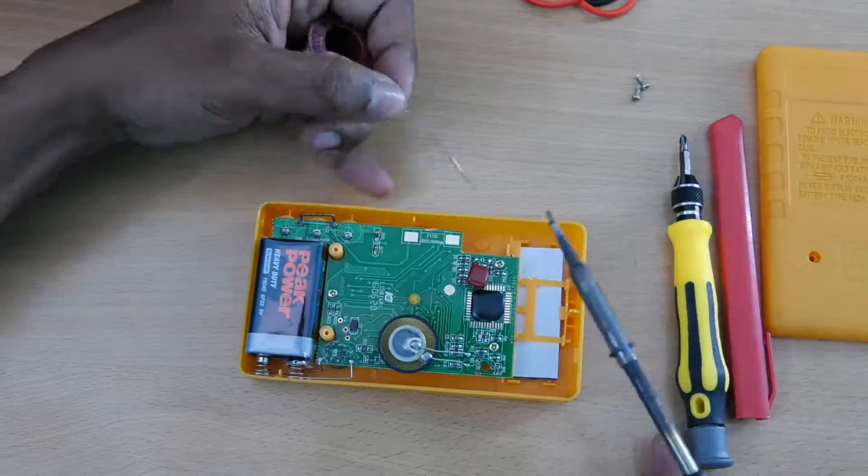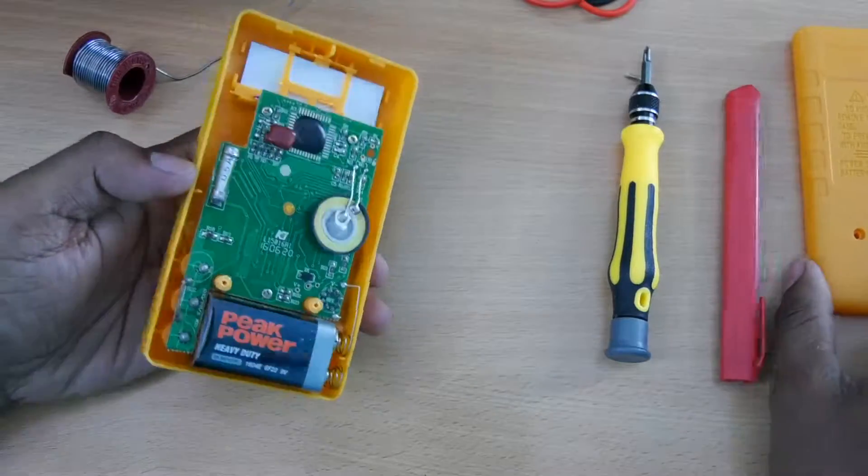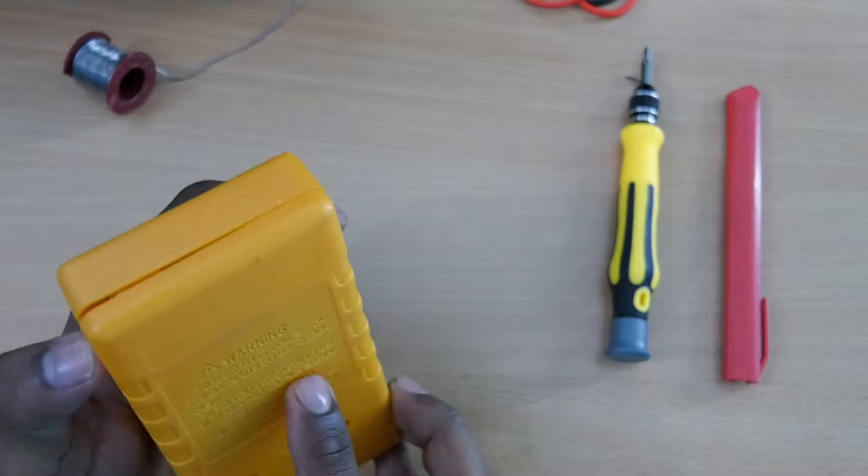Now according to instruction, take a 500 milliampere fuse. Then using a soldering iron, solder the fuse directly to the PCB. Now this fuse will protect the multimeter.